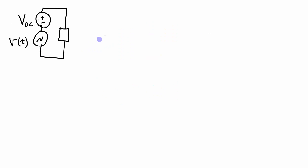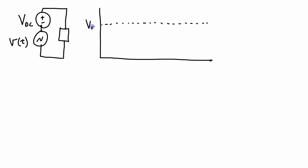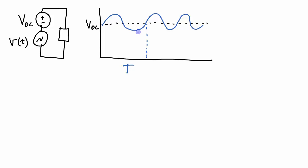What if I have a sinusoid plus some DC offset? That signal would look like the sinusoid riding on top of the DC offset level. To calculate the average formally, I look at the area under the curve over one time period and divide by that period. However, I can note that the amount of area above the DC offset and the amount of area below the DC offset are equal to each other — they cancel out. So in this case the average voltage is simply equal to the DC offset.